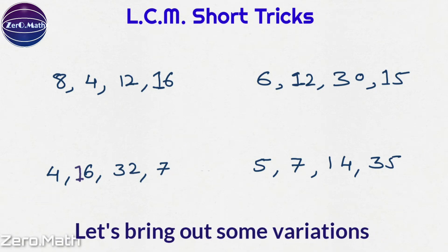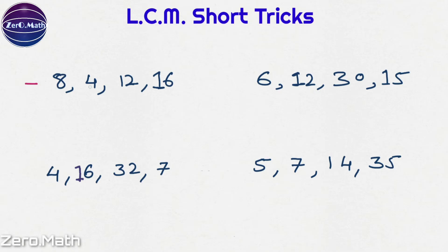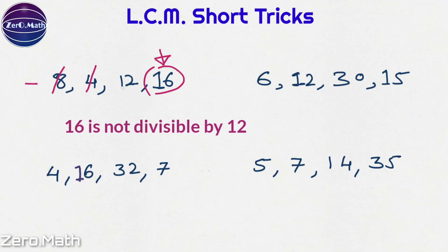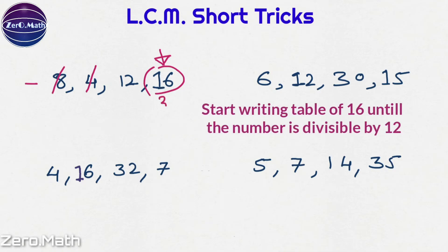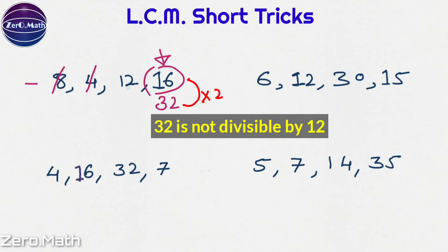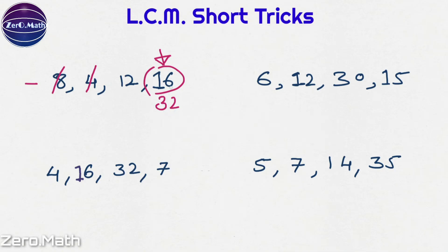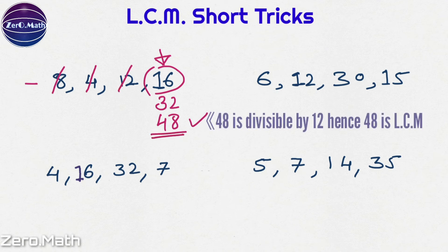Let's bring some variation to the problems. Find the LCM of 8, 4, 12, and 16. Identify the biggest number, which is 16. Find out by how many numbers 16 is completely divisible: it is divisible by 8 and by 4 — cancel them out. The remaining numbers are 12 and 16, so we need to find the LCM of 12 and 16. Write the table of 16: 16 × 2 = 32 — is 32 divisible by 12? No. Next: 16 × 3 = 48 — is 48 divisible by 12? Yes. So I cancel out 12, and 48 is my LCM.